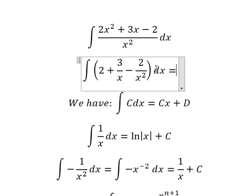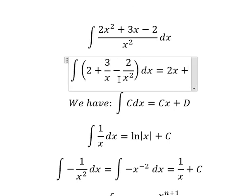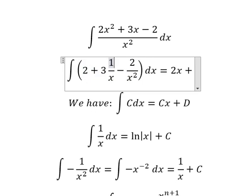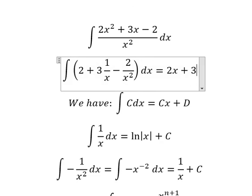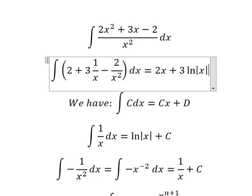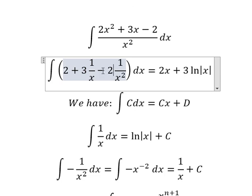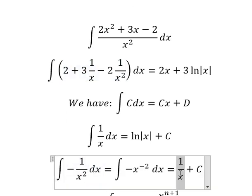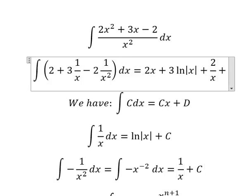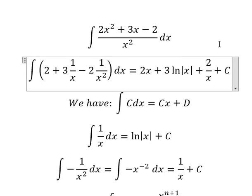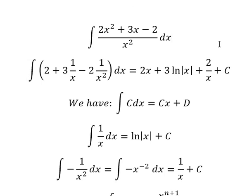For the term with 2, we have 2x. For the term with 3, that's 3 multiplied by ln|x|. And the integration of -1/x² gives us 1/x, plus C. This is the end. Thank you for watching.